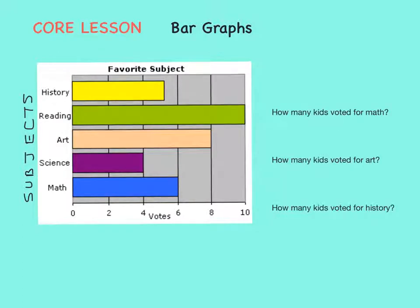How many kids voted for math as their favorite subject? Well, first we find math on our bar graph and here it is. The math bar is blue and it goes all the way to the line that represents six. So six kids voted for math.